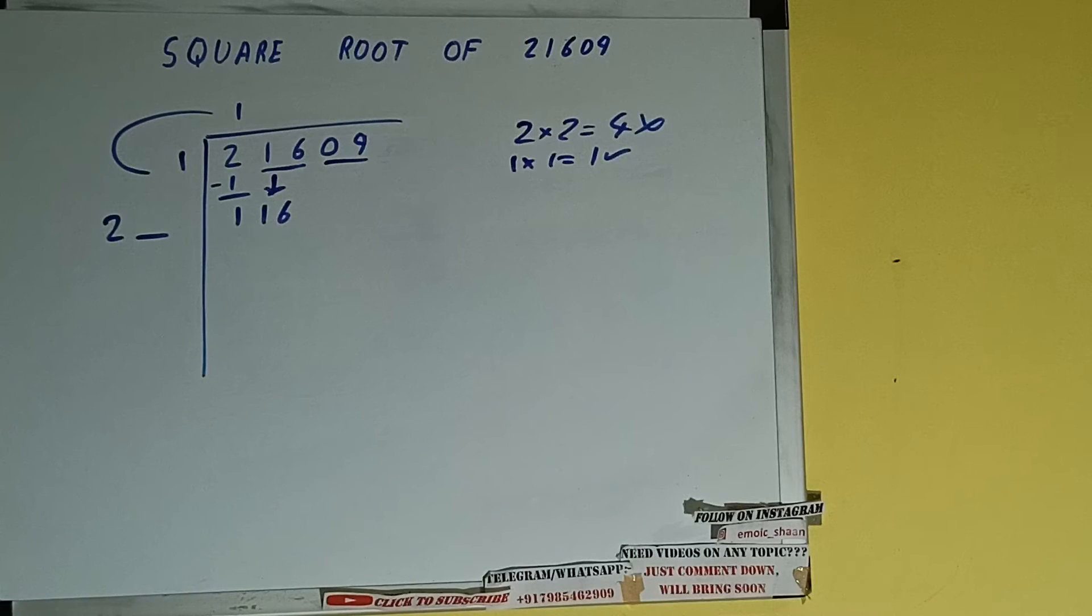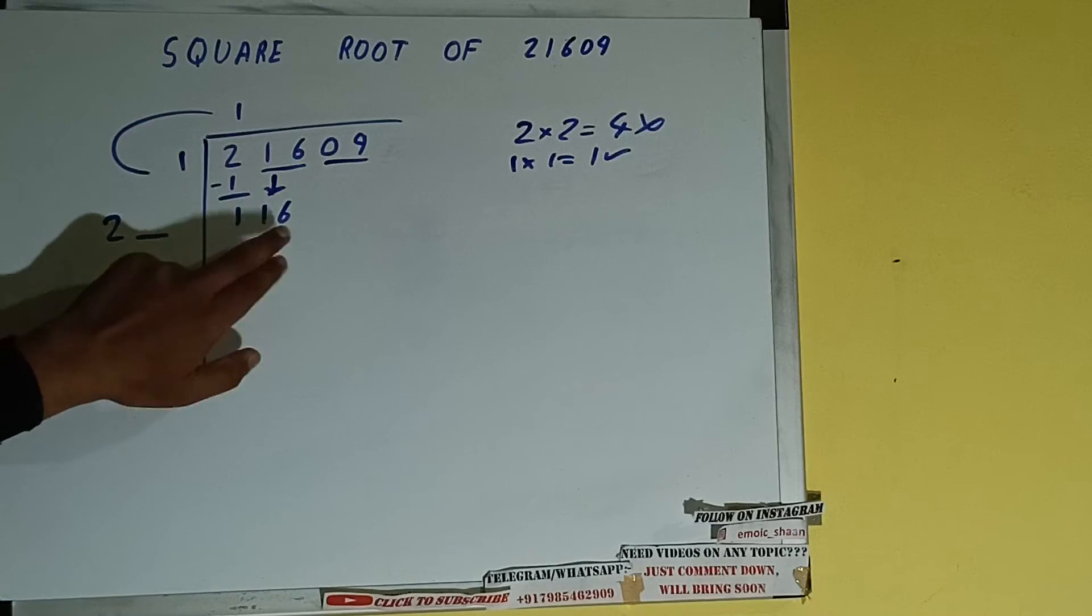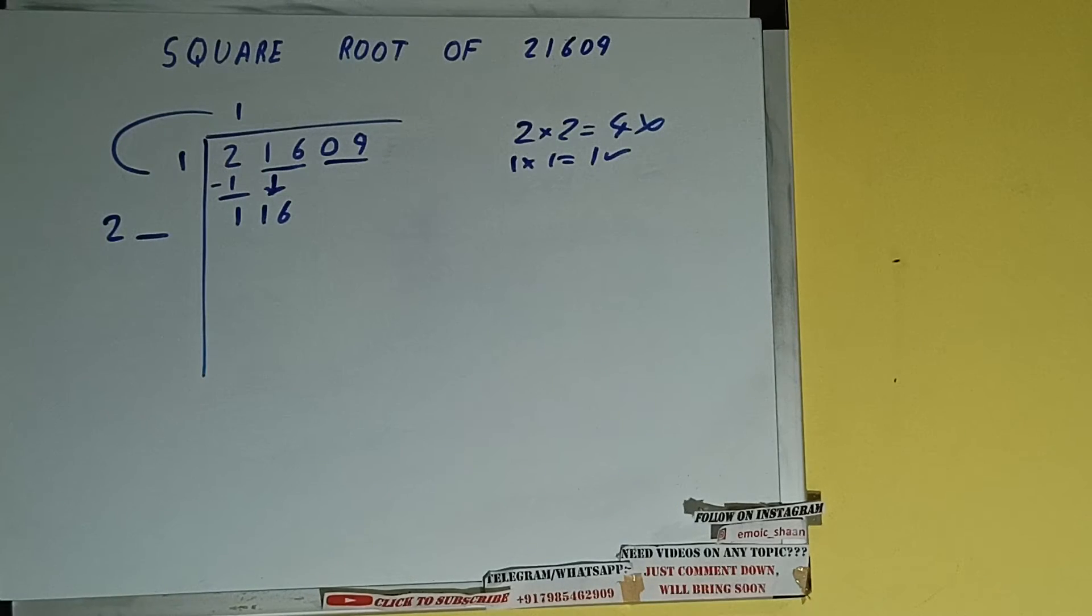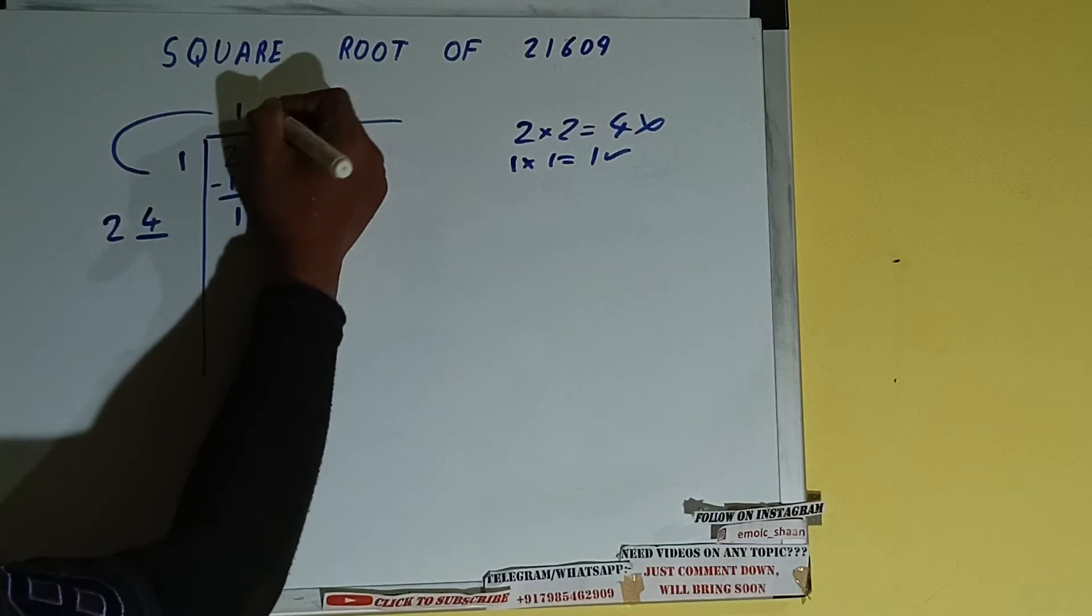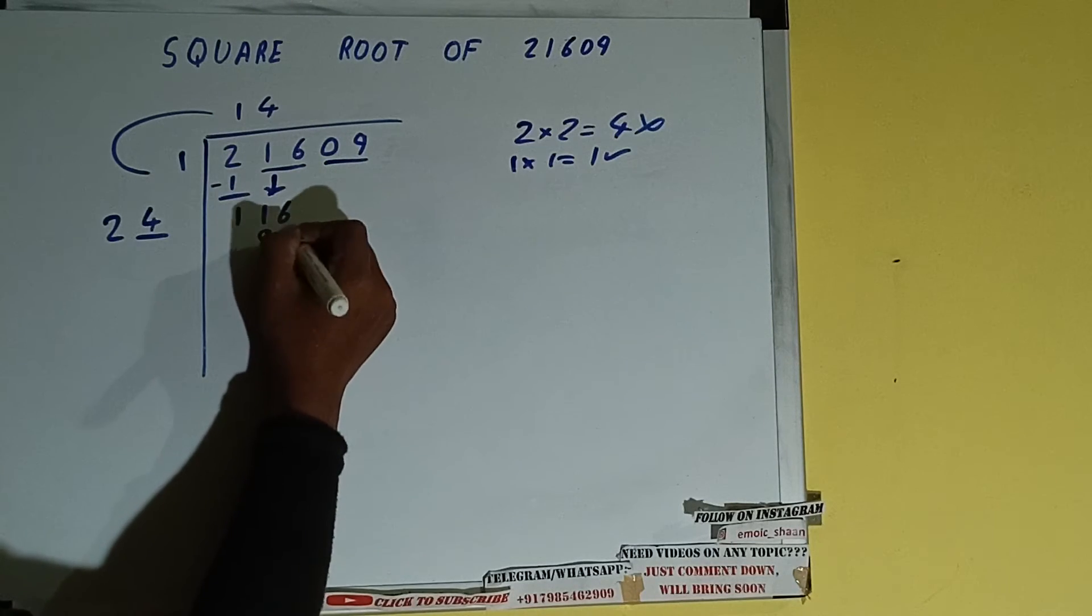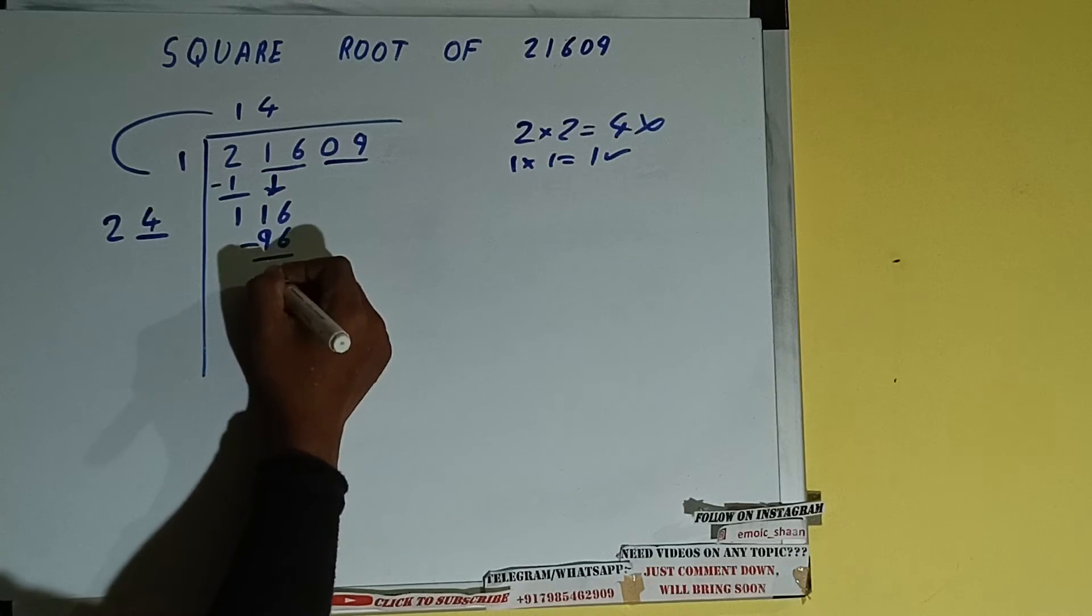So if we write 5 here and 5 here, we'll be getting 125, which is bigger than 116, so we cannot use 5. We'll be using 4. So 4 here and 4 here. 96 subtract 20 will be left.